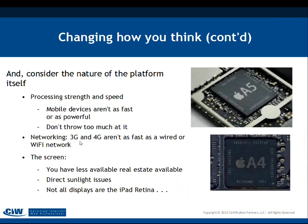Processing strength and speed is an issue — phones aren't as powerful. You can't throw too much at them. Also, 3G and 4G networks aren't as fast as a wired or Wi-Fi network. You have less real estate available. Direct sunlight is always an issue with phones. As a designer, that matters — you might like to use pastels or certain colors, but it might not work well for users in bright environments or with lower-quality displays.